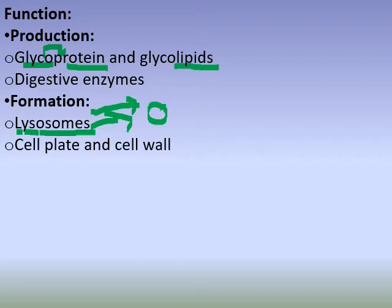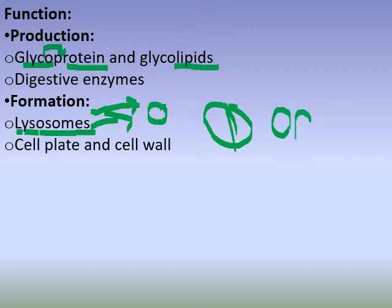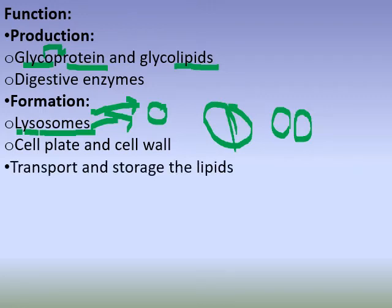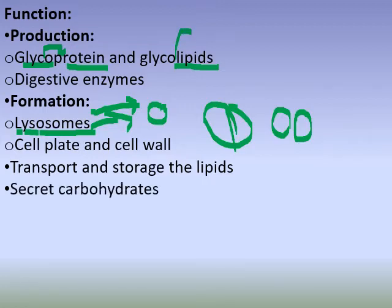During cell division, the Golgi Complex helps form the cell plate, and the cell plate will form the cell wall. You can also mix it with glucoprotein, lipid, and glycolipid to build the cell wall.